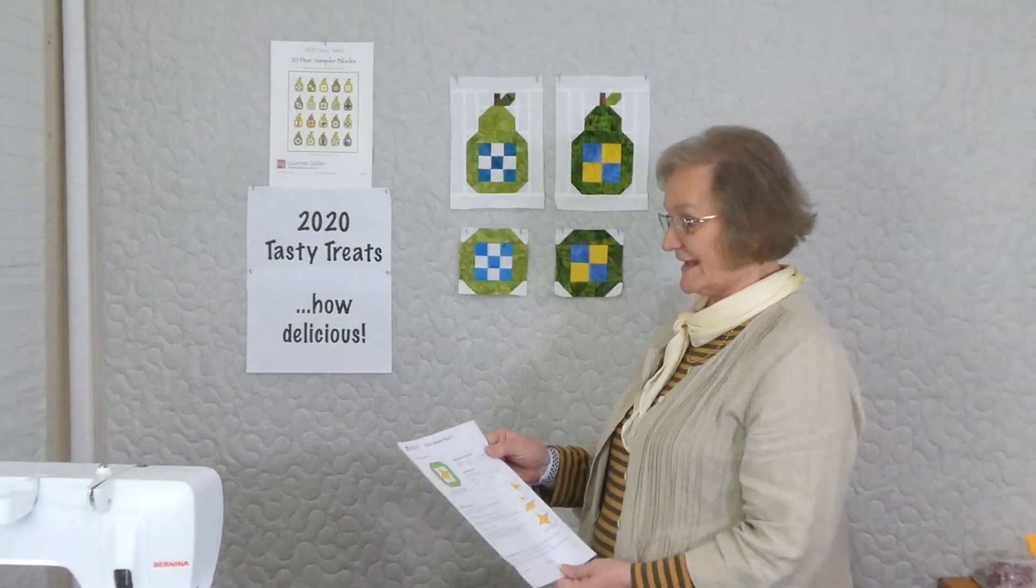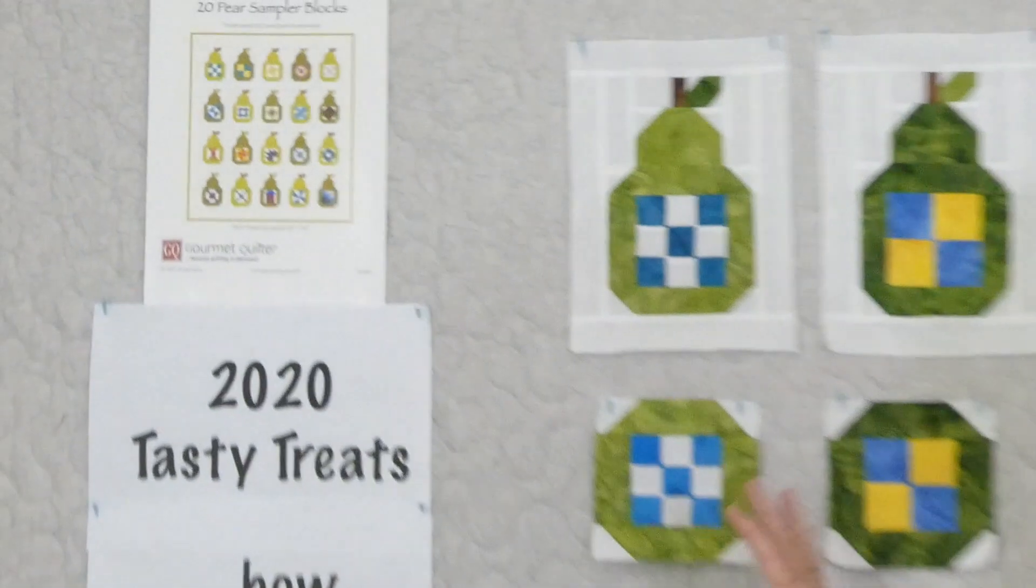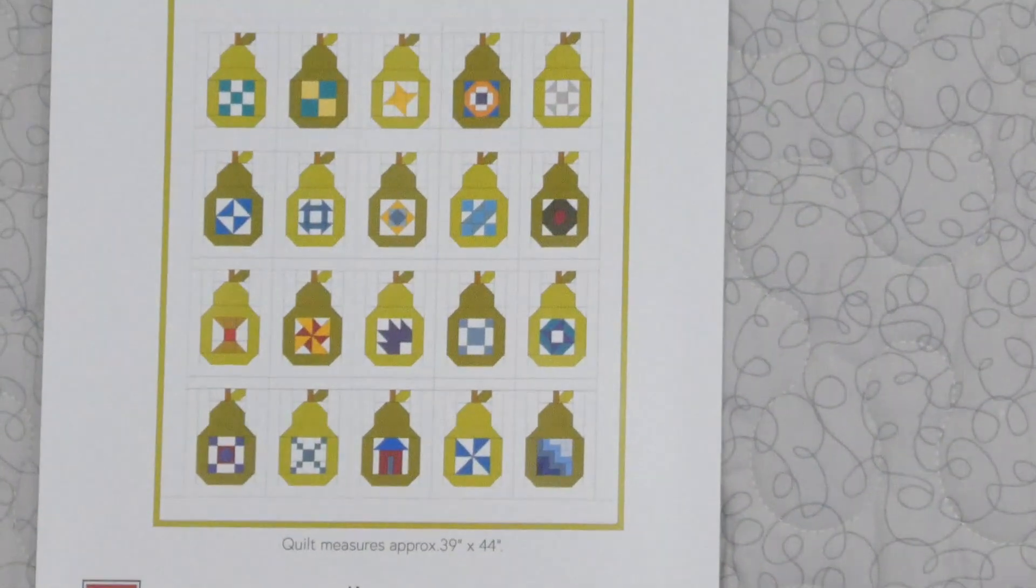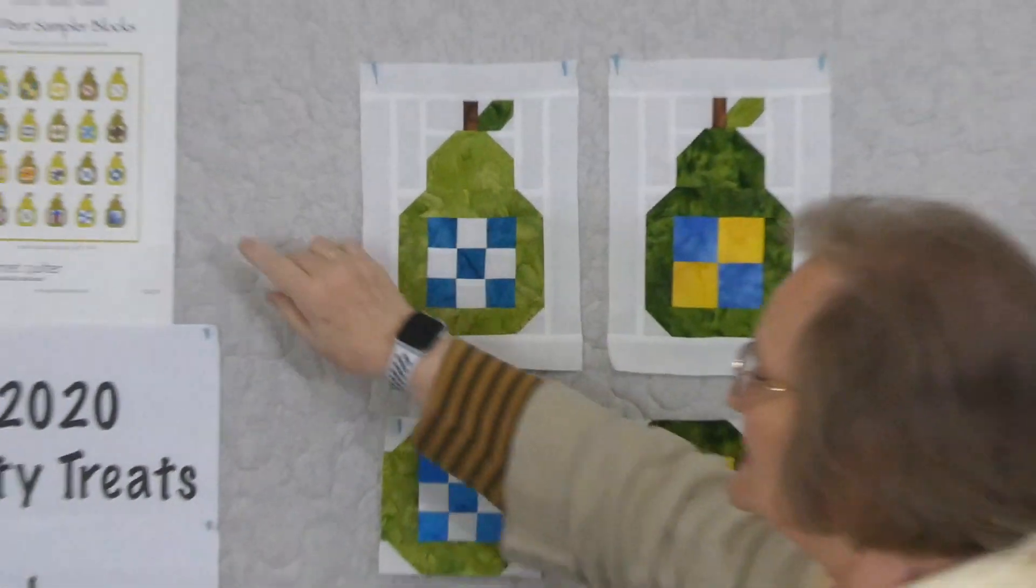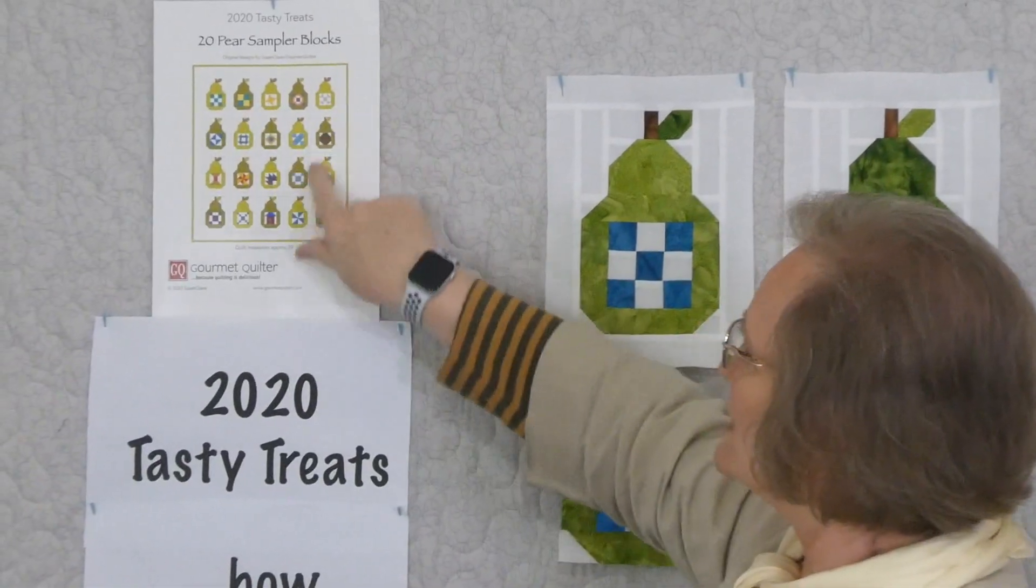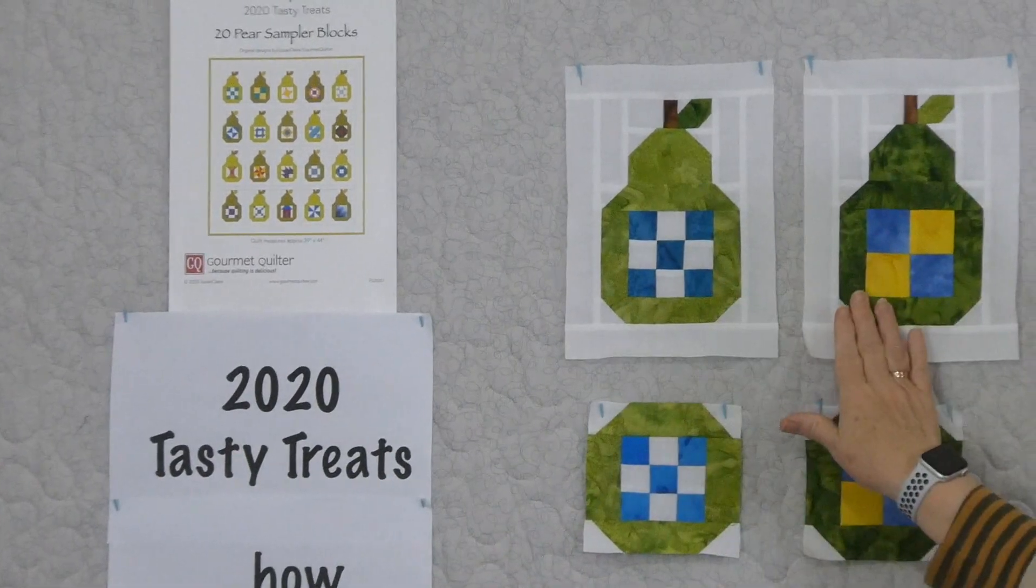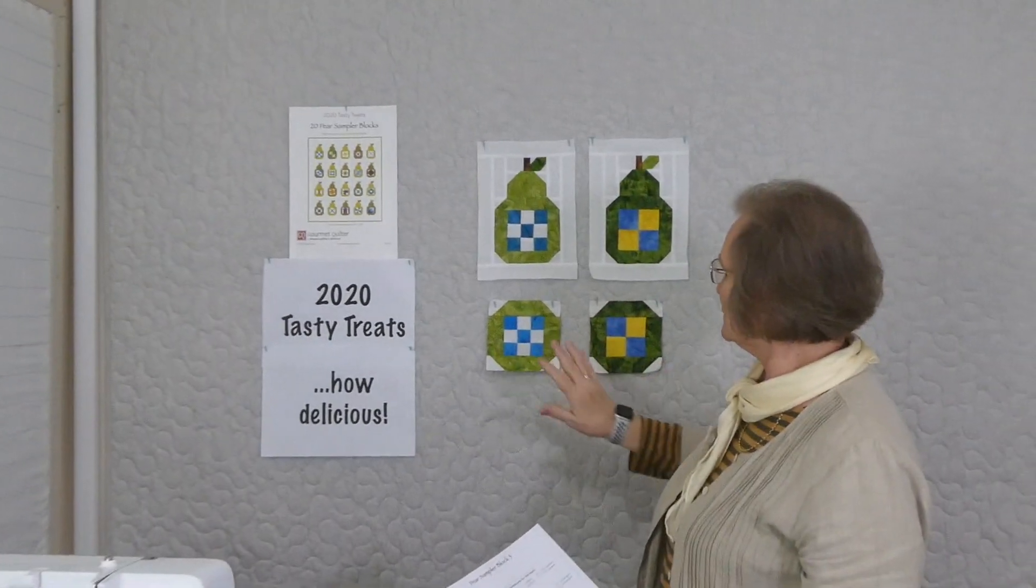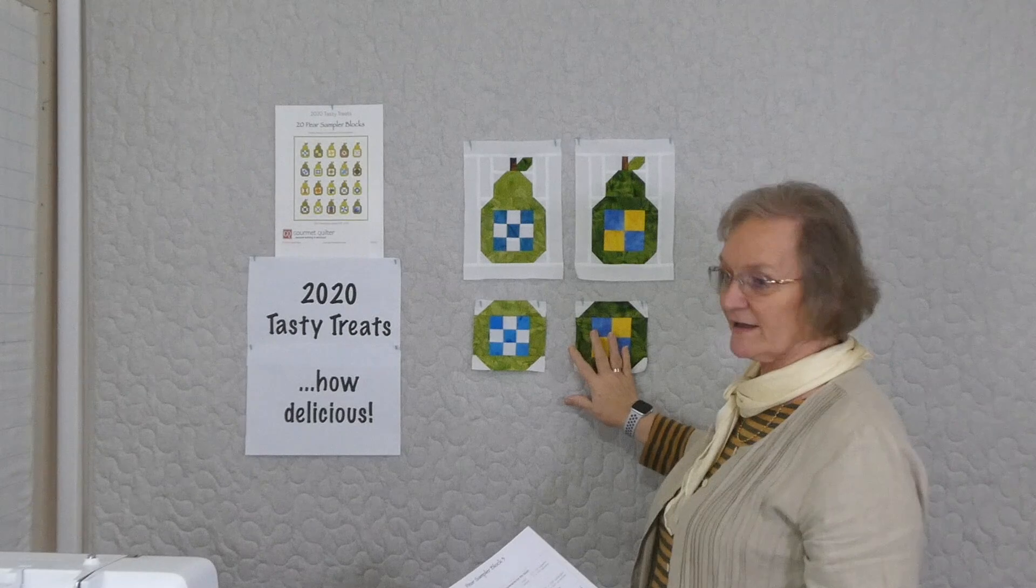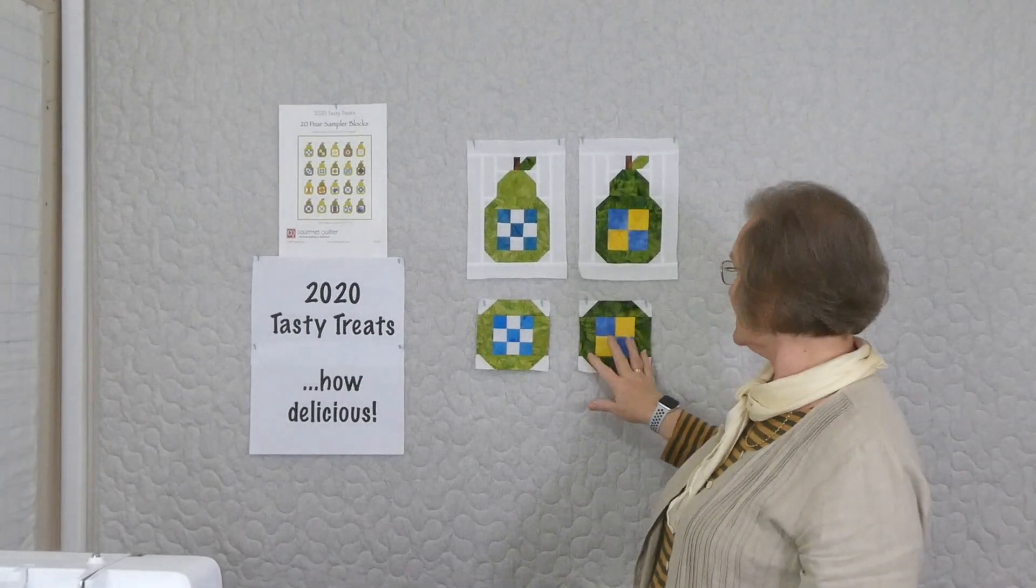We're having a huge amount of fun in 2020 doing all sorts of delicious things, and this time we're doing a very delicious thing. We're making a mini pear sampler with these very delicious looking pears. Inside they've got these little different blocks, so we've got 20 different blocks that we're doing inside the pears. We're using two different greens for our pears and we've made two blocks so far of the 20, so we're on to block number three this time.